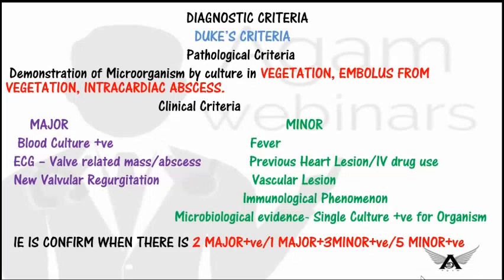Clinical criteria consists of major and minor criteria. The three major clinical criteria are: (1) blood culture positive for a causative organism; (2) identification of a valve-related mass or abscess by echocardiographic examination; and (3) new valvular regurgitation. Minor clinical criteria include: fever, predisposing heart lesion or IV drug abuse, and vascular lesions — arterial petechiae, splinter hemorrhages, emboli, septic infarcts, mycotic aneurysm, intracranial hemorrhage, and Janeway lesions.